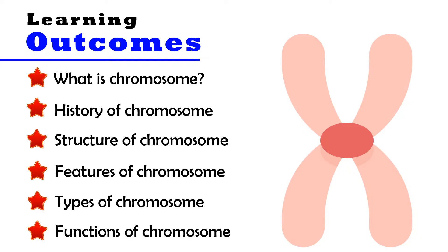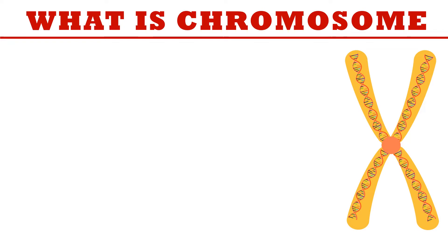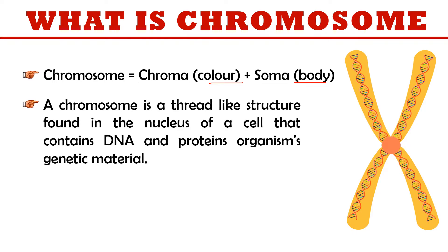First of all, what is a chromosome? The word chromosome is made up of two words: chroma and soma. Chroma means color while soma means body, so chromosome means colored body. Chromosomes easily absorb dye and take a pattern of light and dark when exposed to different stains. Chromosomes are colored bodies present in the nucleus and are thread-like structures.